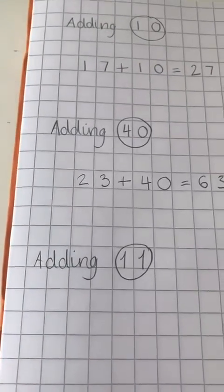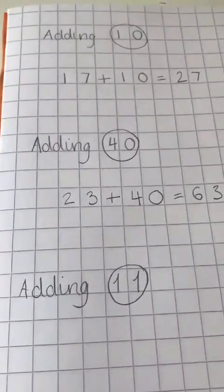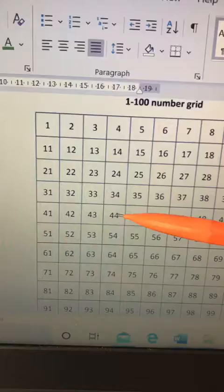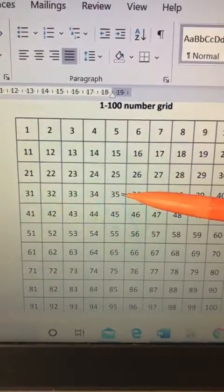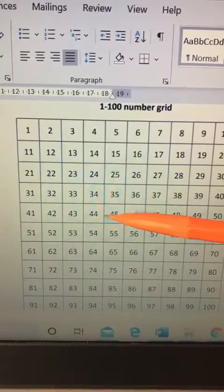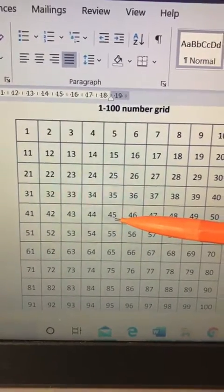Now what about adding 11? Well, we're going to use a new method. Let's start with the number 35. Here's 35. I know that if I go straight down one row, that will be adding 10, which takes me to 45. But we're not trying to add 10. We're trying to add 11.